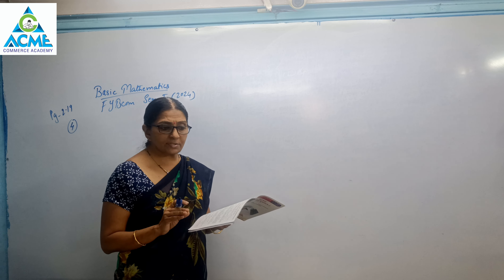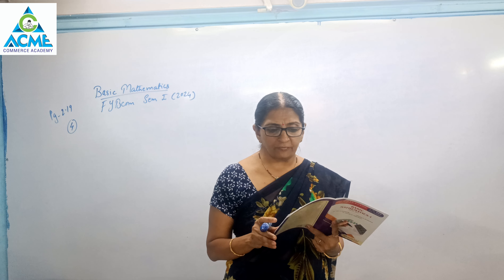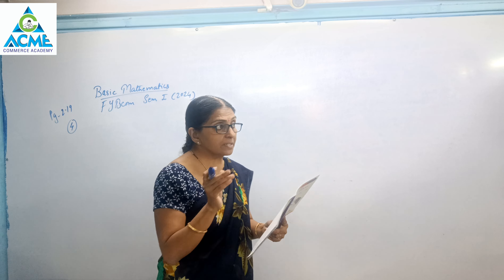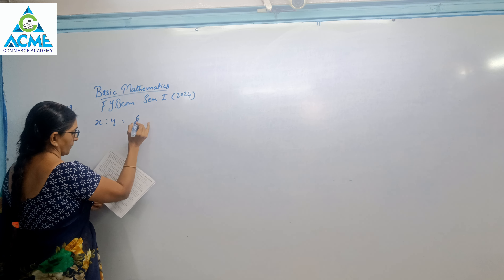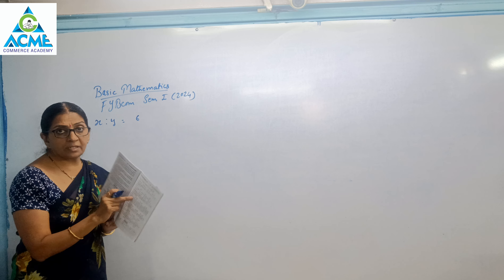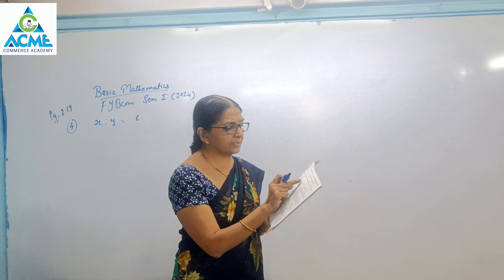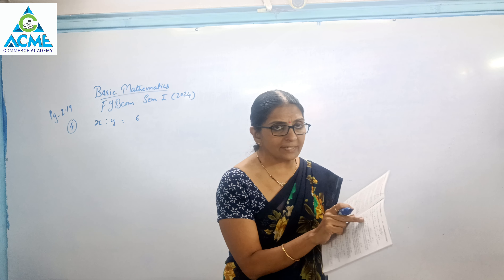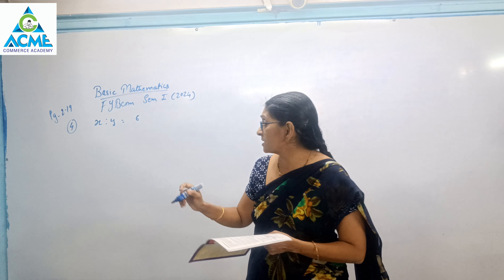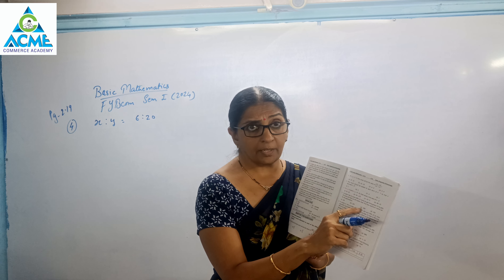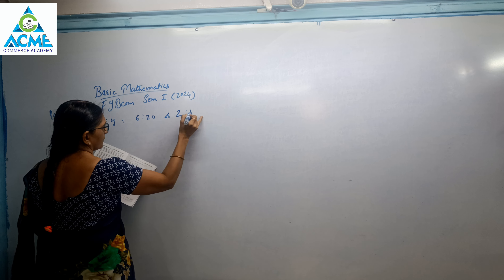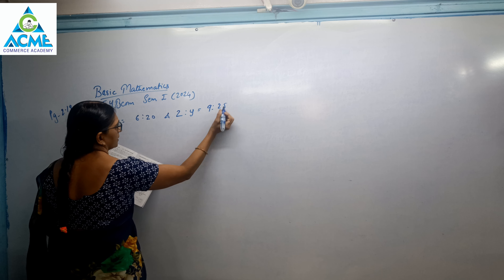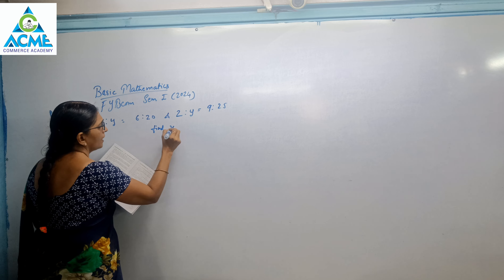The question is x is to y is equal to 6 is to 20, and z is to y is equal to 9 is to 25. Now if you see the original question was incomplete — please make the correction that x is to y is equal to 6 is to 20. So I have done the correction: x to y is equal to 6 to 20, and z to y is equal to 9 to 25. What you are supposed to find? Find x is to z.